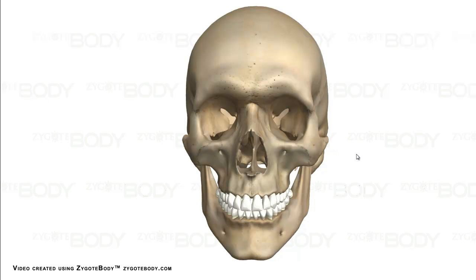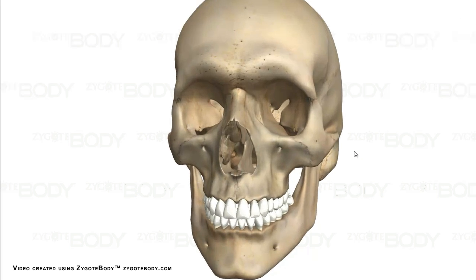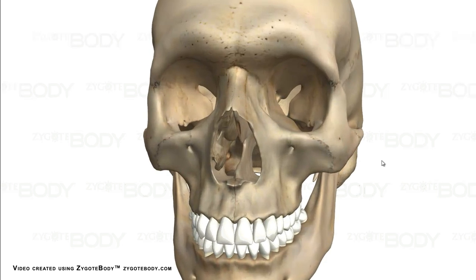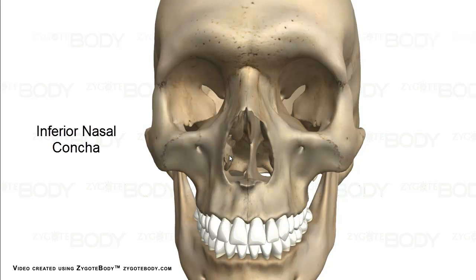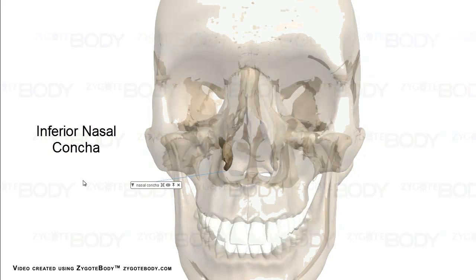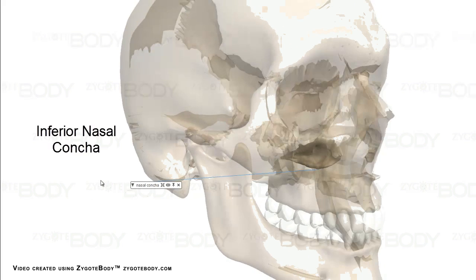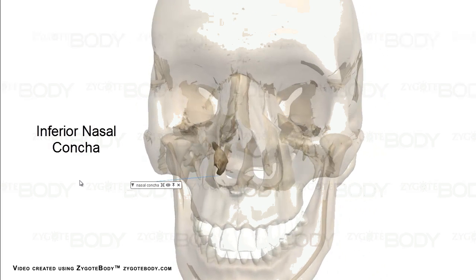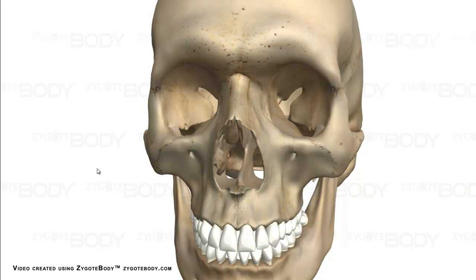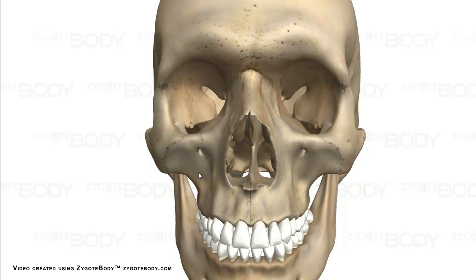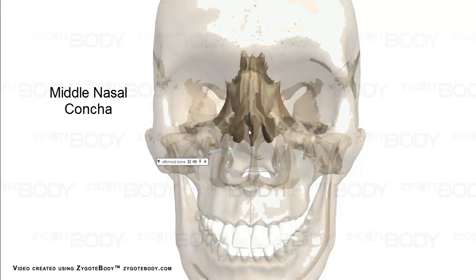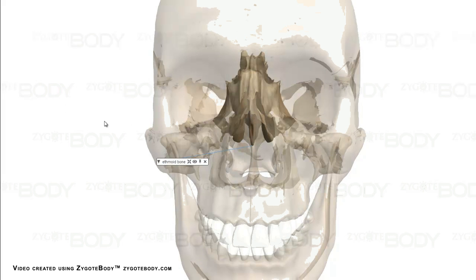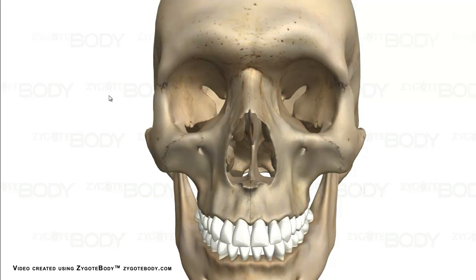Now if we look more inside the nose, there are some features we can see. This is going to be the inferior nasal conch. The one above it is the middle nasal conch, which is part of the ethmoid bone, as well as the superior nasal conch. But unless we split the skull in half, we will not see the superior nasal conch.